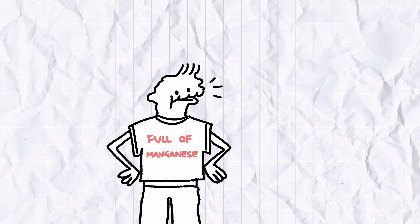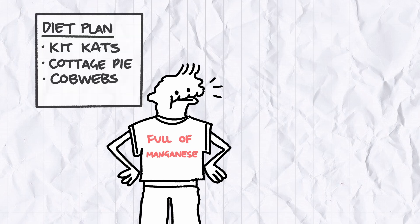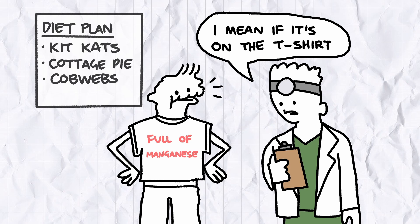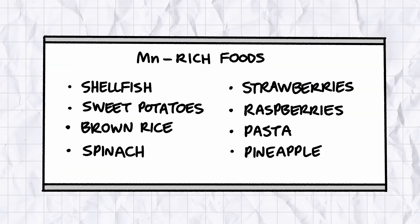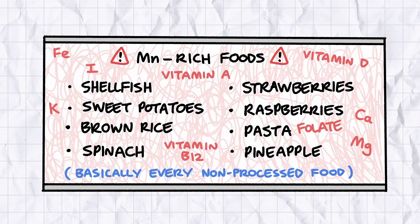Manganese deficiency is an exceedingly rare diagnosis in humans. Even if something really weird was going on with your diet, it's not something that most doctors actively look for. You can get more than enough manganese in your diet in loads of staple foods, and if you're deficient in it, chances are you're also deficient in about a thousand other things that are easier to check for.